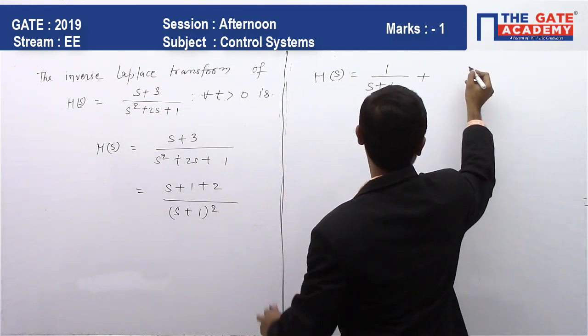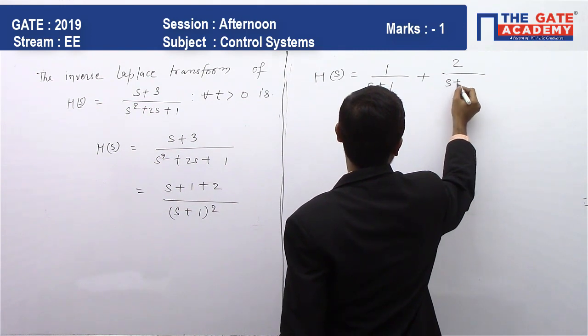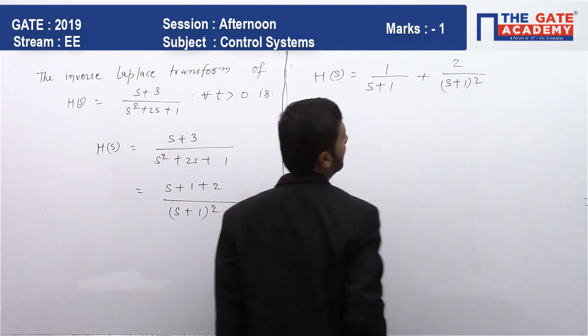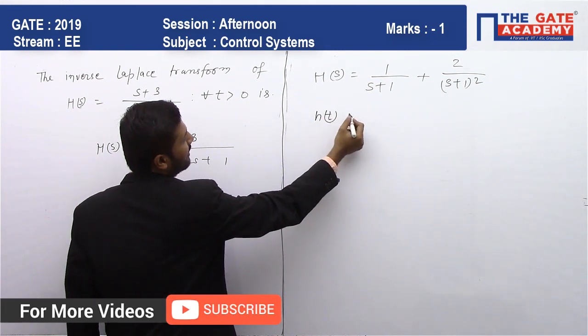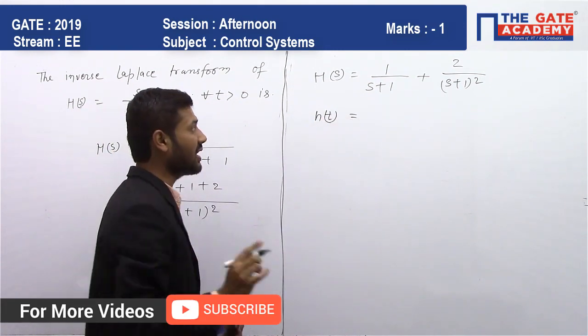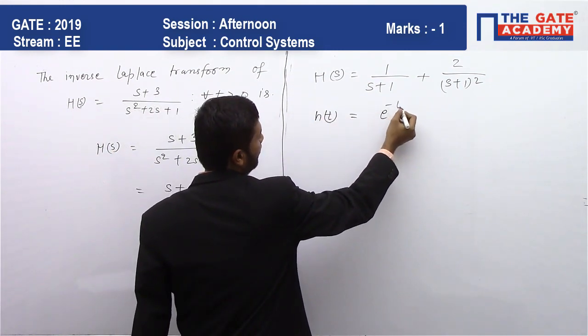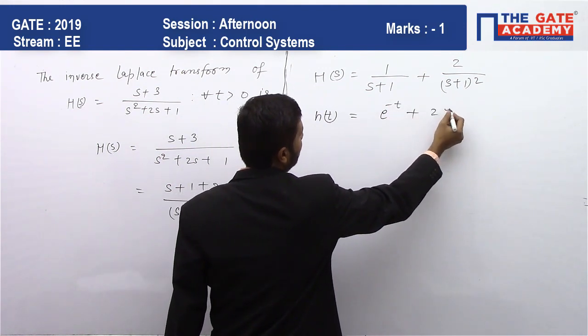Now we'll have to find the inverse Laplace. So this h(t), the inverse Laplace of H(s) is h(t), and that equals e^(-t) + 2te^(-t).